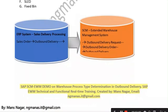In the ERP system, the sales order becomes an outbound delivery, which is then converted to an outbound delivery. In the EWM SCM box, the outbound delivery request converts into the outbound delivery order, and it finally converts into the outbound delivery.